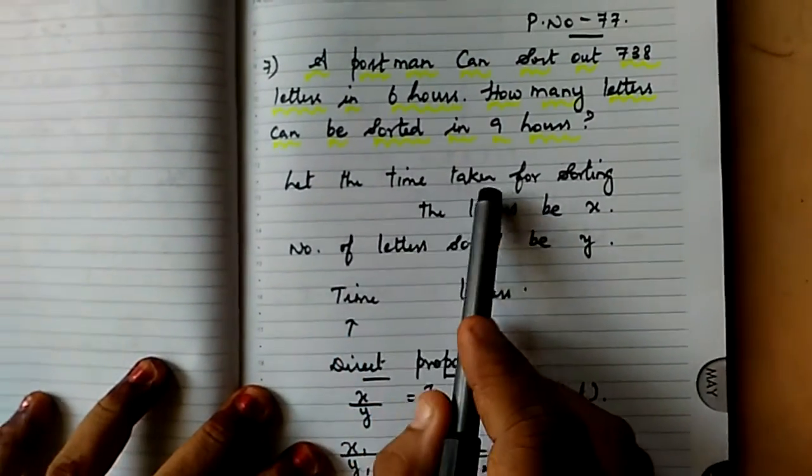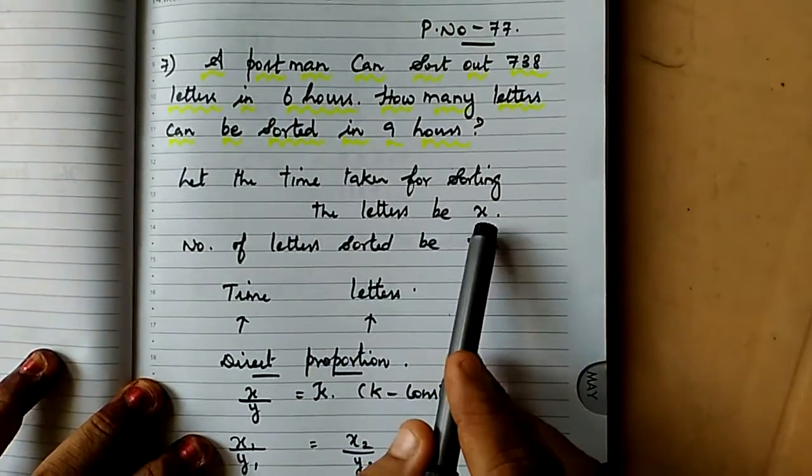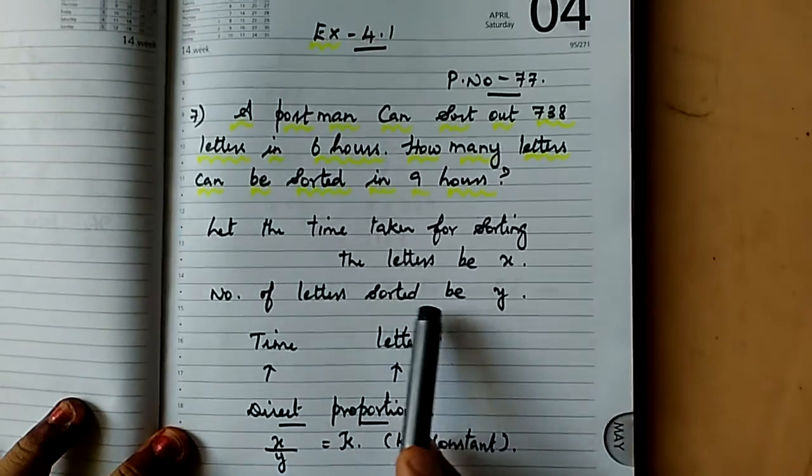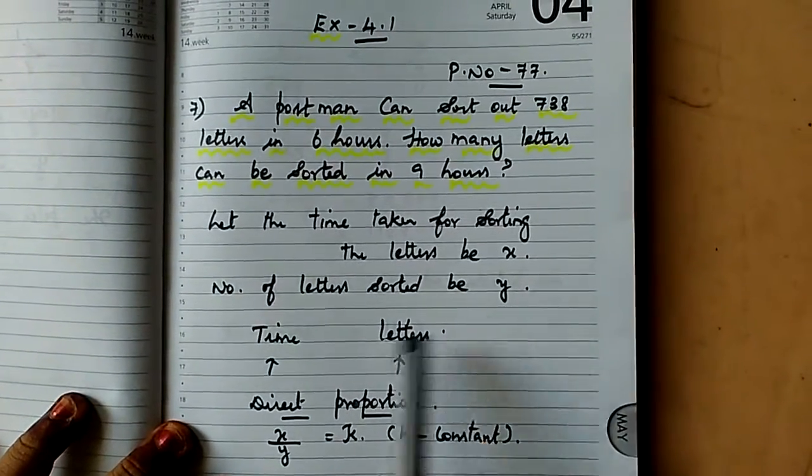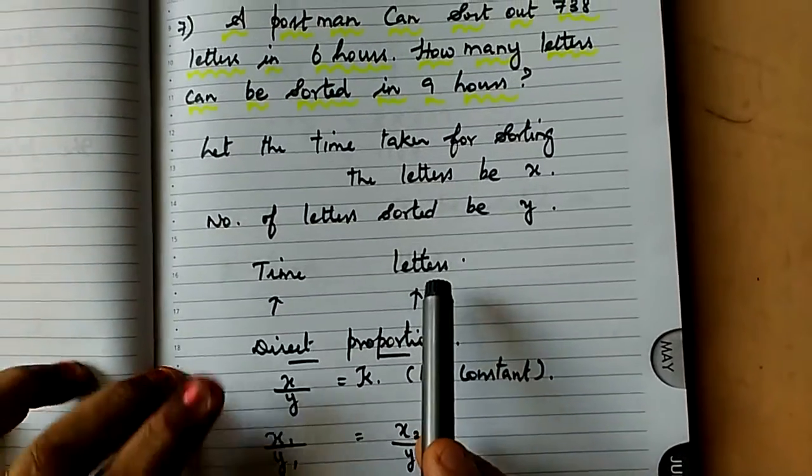Let the time taken for sorting the letters be x. Number of letters sorted in the particular time be y. Am I right, children? So now for time and letters, there are two categories.